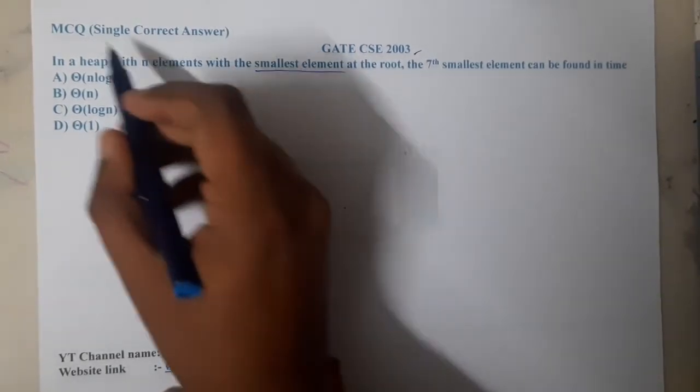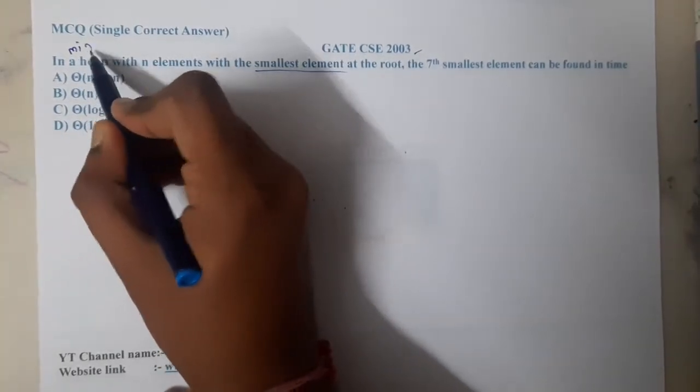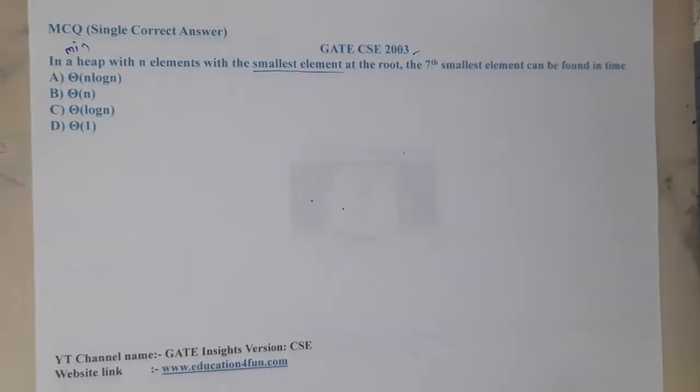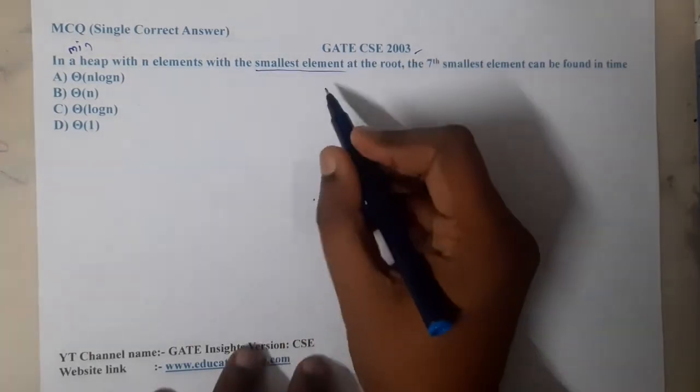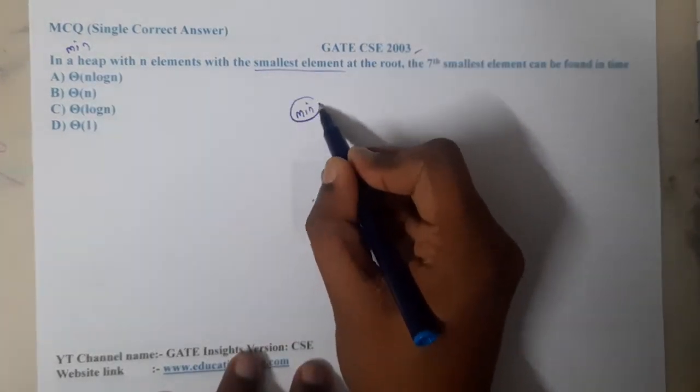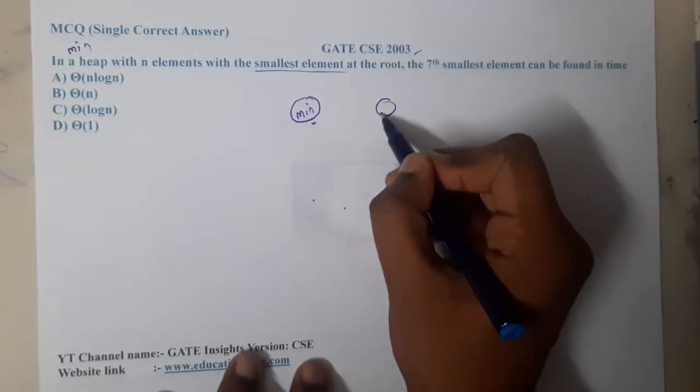with this wording, you can identify what type of heap this is - it's a min heap, right? The question asks where the seventh smallest element can be found. So here we are trying to find the minimum element. If you recall the property of a min heap,